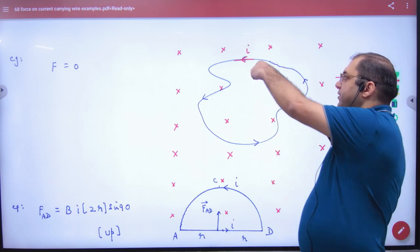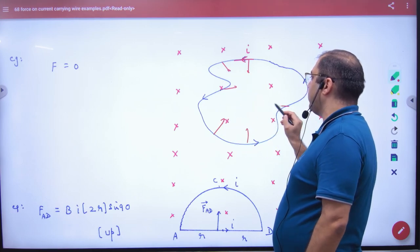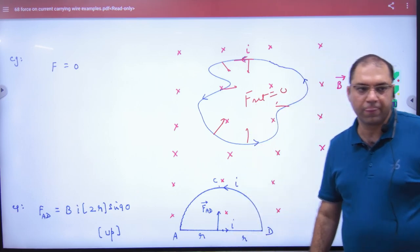Under the board, the current is here, the force is downward. On the other side, the force is upward. What should the net answer be after solving everything? Zero.